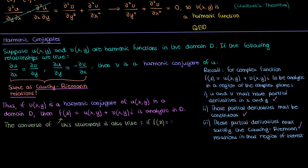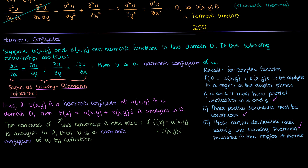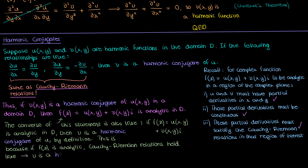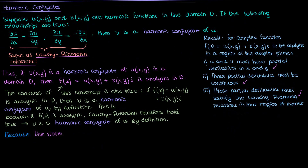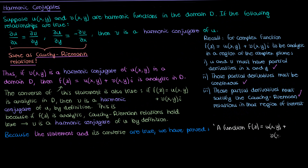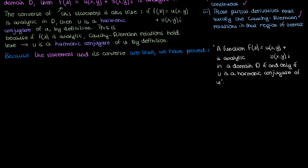The converse of this statement is also true. If f of z composed of the real part u and imaginary part v is analytic in a domain D, then v is a harmonic conjugate of u. Why? Because if f of z is analytic, the Cauchy-Riemann relations hold true, and if the Cauchy-Riemann relations hold true, then v by definition is a harmonic conjugate of u. And so because this statement and its converse are both true, we have essentially proven the theorem that a function f of z equal to u plus vi is analytic in a domain D if and only if v is a harmonic conjugate of u.